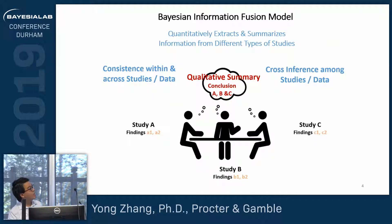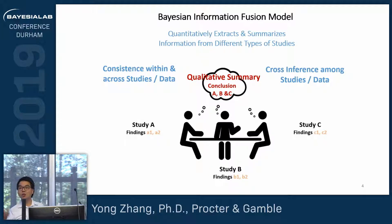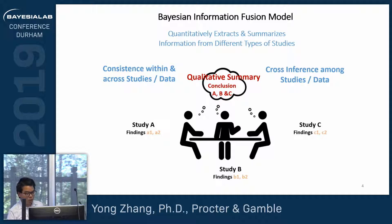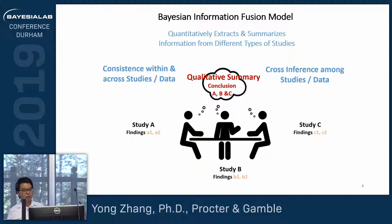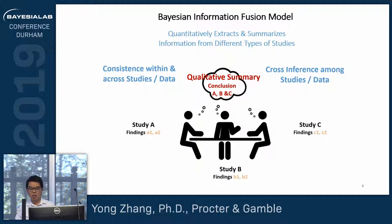Most importantly, in scenario one, it would be great if you have all the studies — the more studies you launch, the higher the cost — but if you have all the studies, you can check the consistency of your conclusion, a body of evidence. Another context is actually this part: if you only have data from some studies, can you infer information from other studies? Let's say you have information on study A — can you infer some information on study C? We call that cross-inference.